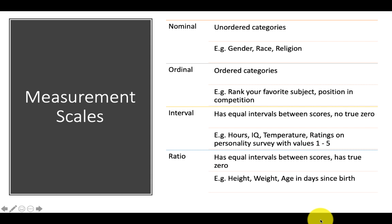Interval scales have equal intervals between scores but don't have a true value of zero — for example, hours, IQ level, temperature, or even ratings on a personality survey with values from 1 to 5. Ratios also have equal intervals between scores but have a true zero — where zero has a meaning — such as height, weight, or age in days since birth.